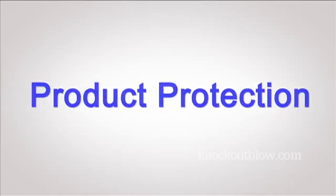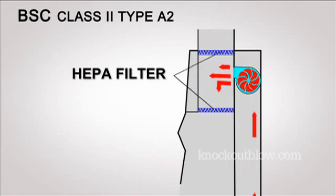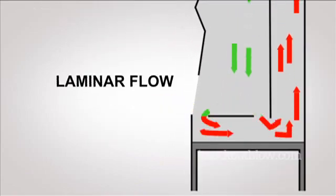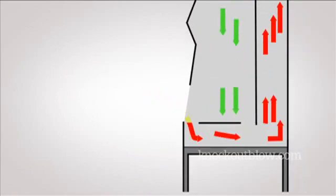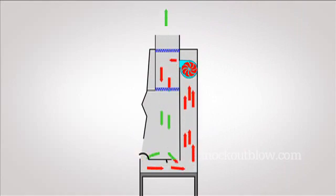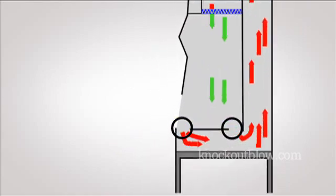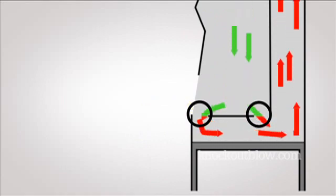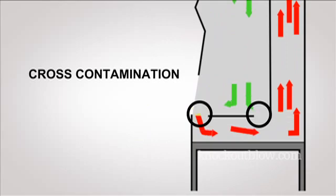Product Protection: The downward flow of HEPA filtered air across the work surface of the cabinet in a single direction at a constant speed or laminar flow. The downward moving air flow splits as it approaches the work surface. The fan draws part of the air to the front grill and the remainder to the rear grill. This split generally occurs about halfway between the front and rear grills above the work surface to prevent cross-contamination.